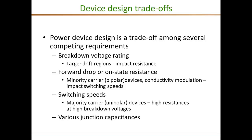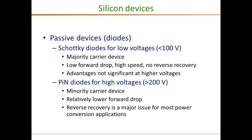Given these design trade-offs, the current trend using silicon material for passive diodes is to use Schottky diodes for low voltage applications. Schottky diodes are majority carrier devices and feature excellent switching speeds. They also have no reverse recovery — a major advantage for many power converter applications — and importantly, very low forward drop. However, these advantages, especially the low forward drop, become less significant at voltages above 100 or 200 volts. For high voltage applications, silicon devices employ PIN diodes, which are minority carrier devices with relatively lower forward drop at high voltages.